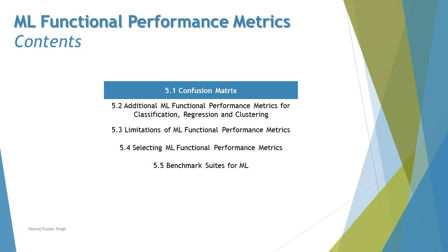We have different topics to cover: the confusion matrix, additional ML functional performance metrics for classification, regression, and clustering, limitations of ML functional performance metrics, selection of ML performance metrics, and setting up benchmarks for ML test suites. We'll be getting started today with 5.1 — the Confusion Matrix — which gives a quick overview of how to measure the effectiveness of an ML model.